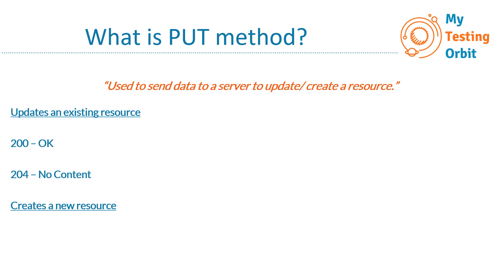Now let's go to the next part of the definition: 'create a resource.' When we send a PUT request to update a specific resource, if that resource doesn't already exist on the server, we will receive response 201 (Created). This means the resource we wanted to update didn't exist, so it has now been created. Next time we send the same request, the resource will exist and can be updated.